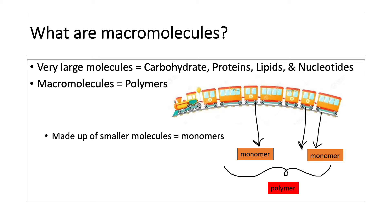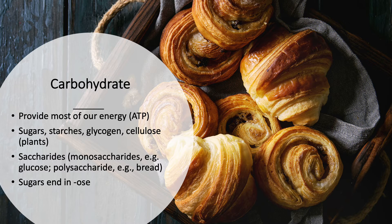Since macromolecules are a bunch of molecules grouped together, we use the term polymers to describe them. I have a picture here of a train made up of a whole bunch of cars — that's kind of how they are. Macromolecules are made up of smaller molecules called monomers. Mono means one, poly means many, so a polymer is many monomers. Each train car represents a monomer, and together — whether two, three, or more — we use the term polymer.